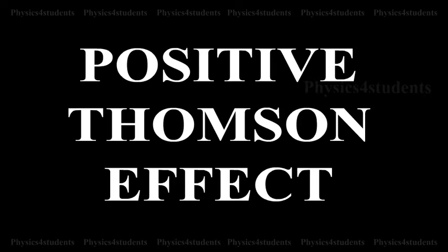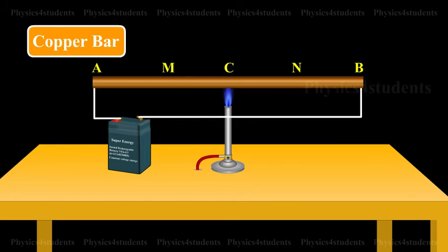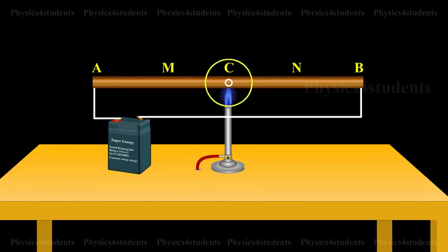Positive Thomson Effect. Consider a copper bar AB heated in the middle at the point C and current flowing as shown in the animation.